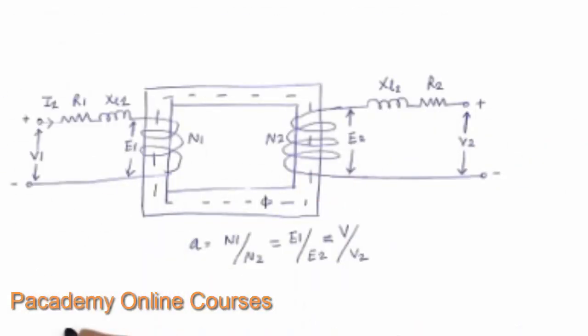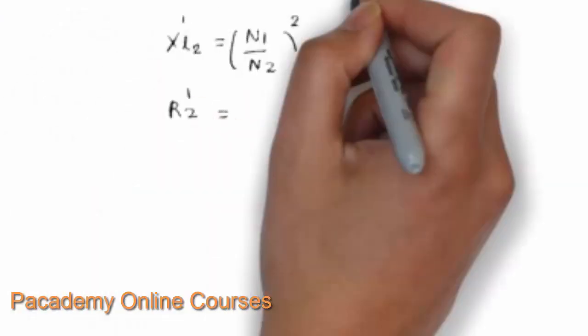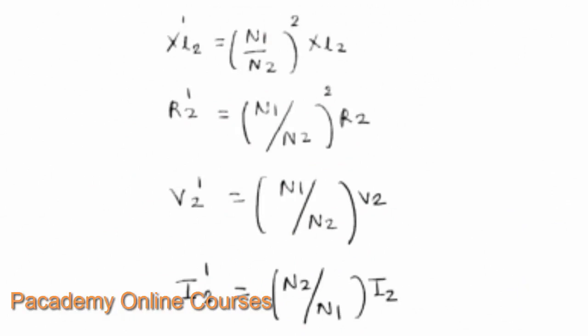At frequencies close to 50 Hz — the normal operating frequency in the power system — the resistance and reactance of the windings can be treated as lumped parameters, written as R1 and XL1 for the primary, and R2 and XL2 for the secondary. The secondary resistance and leakage reactance can be moved to the primary side by multiplying by the square of the turns ratio, and secondary voltages are moved to the primary side by multiplying by the turns ratio, giving V2' = (N1/N2) × V2.